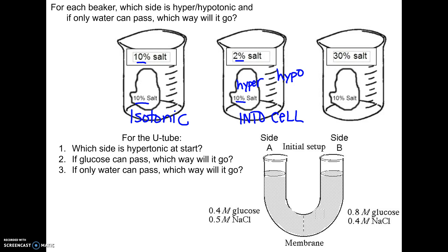We're assuming salt can't pass and only water can. Water goes from where there's more to where there's less — outside is 98% water, inside is only 90% water, confirming water enters the cell. Last situation: 30% salt outside, 10% inside — outside is hypertonic, inside is hypotonic, so water goes out of the cell. That cell would shrivel up.